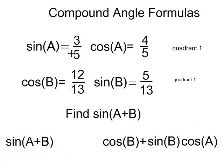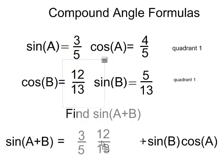Sin A is 3 fifths, so I just have to put a 3 fifths in there. Cos B is 12 thirteenths, so I just have to put a 12 thirteenths, so that's 3 fifths times 12 thirteenths.